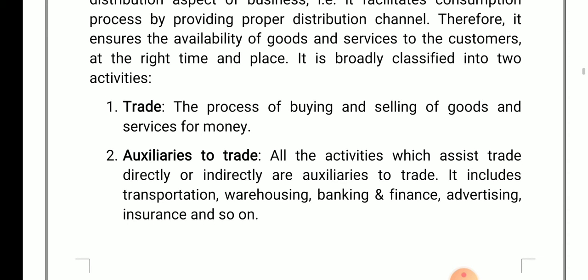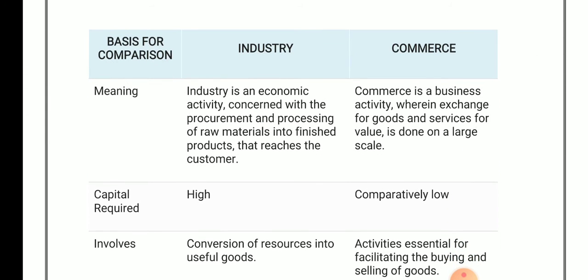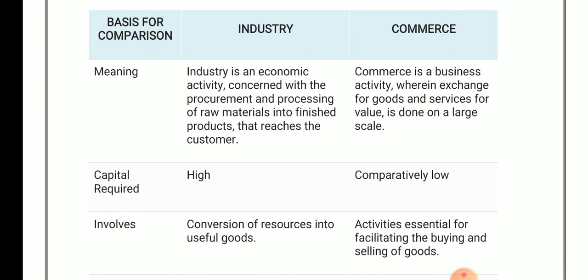Now in today's lecture we are covering the basic difference between industry and commerce. Basically, what is an industry? In our previous lecture we covered industry. Basically, an industry is a place which converts raw material into finished product.